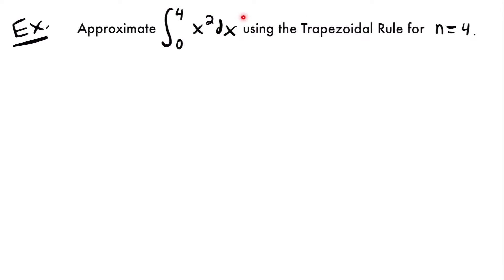Welcome back. Let's start with this example. We want to approximate the integral from 0 to 4 of x squared dx using the trapezoidal rule for n equals 4. What this means is we want to approximate the area under x squared from 0 to 4 using 4 trapezoids. The trapezoidal rule says that we can approximate that area by using this formula.